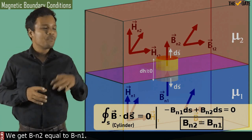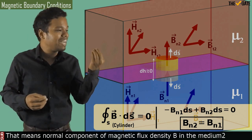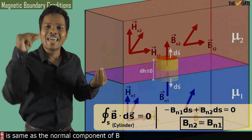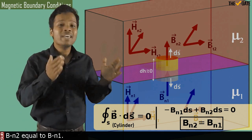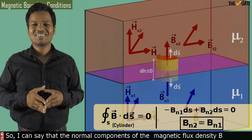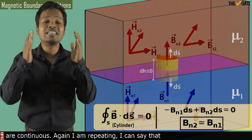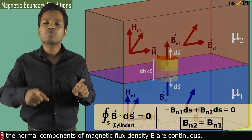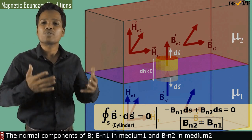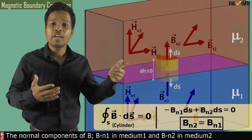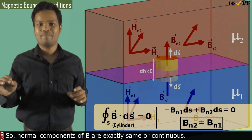From this result we get BN2 equal to BN1. That means the normal component of magnetic flux density B in medium 2 is the same as the normal component of magnetic flux density B in medium 1. Therefore, I can say that the normal components of magnetic flux density B are continuous — meaning BN1 in medium 1 and BN2 in medium 2 are exactly the same.